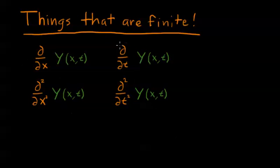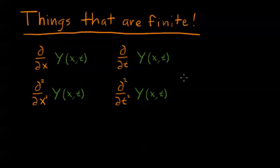Similarly, the first and second derivatives with respect to time must also be finite. The first derivative is finite because a piece of string can't be in two places at once — if it could, it would have an infinite derivative. The second derivative must also be finite because if it weren't, that would mean the force on it was infinite, and we can't apply infinite forces in real life.